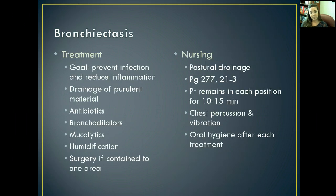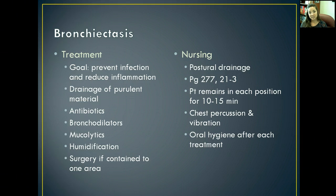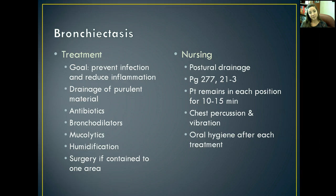The goal of treatment of bronchiectasis is to help prevent further infections and reduce inflammation. It's a chronic problem, but we want to prevent further damage as much as possible. We want to drain the purulent material to aid in their respiratory efforts — give them antibiotics, bronchodilators, mucolytics, and humidify their secretions so that they thin out and the patient can breathe easier. We also might do surgery if the bronchiectasis is contained to one area. As a nurse, we can perform postural drainage to help get out that excess sputum, keeping the patient in each position for 10 to 15 minutes. We also can do chest PT — chest percussion and vibration — to help loosen up those secretions. Oral hygiene is really important after every treatment so that we're not allowing infected sputum to remain in their mouth, which could cause dental infections and systemic infections as well.